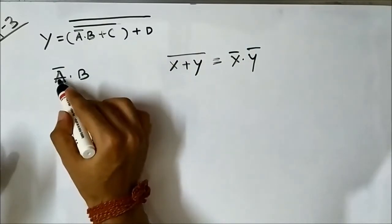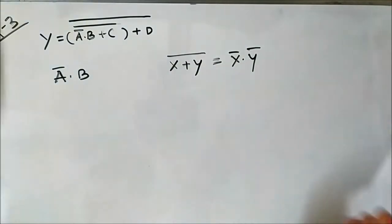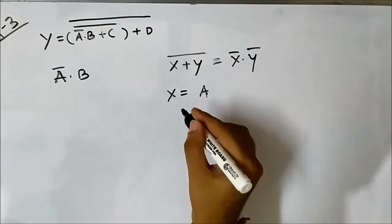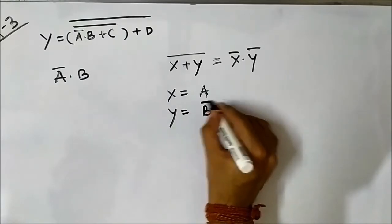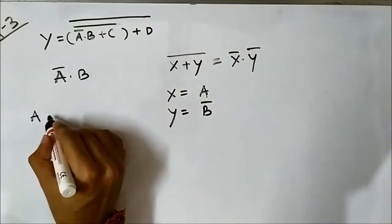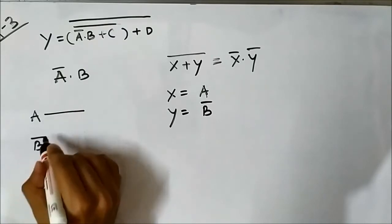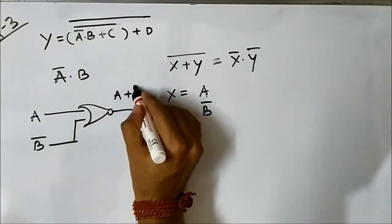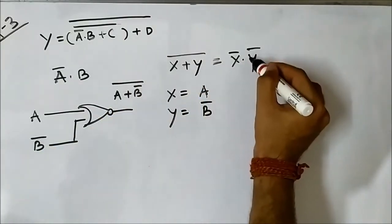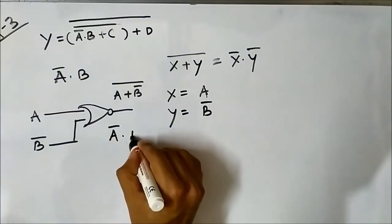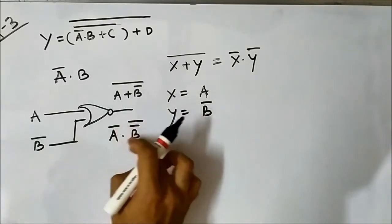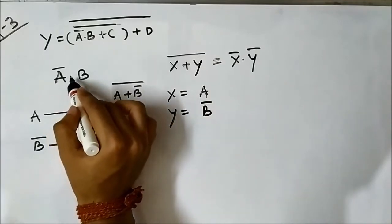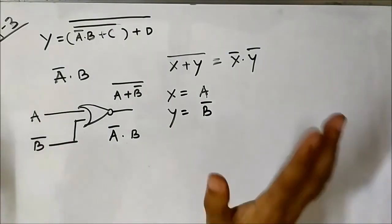We pick x = a and y = b complement, and pass them through a NOR gate. The output will be (a OR b complement) whole complement. Applying De Morgan's theorem gives us a complement AND b complement complement, and since the double complement neutralizes, we get a complement AND b — which is exactly the portion we needed.